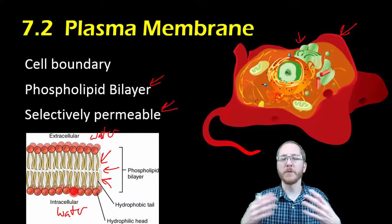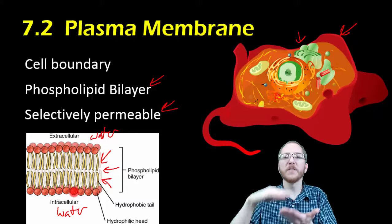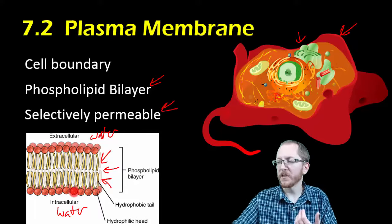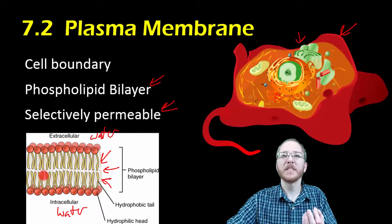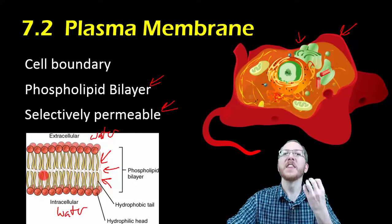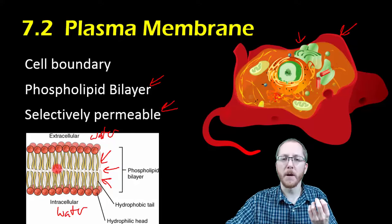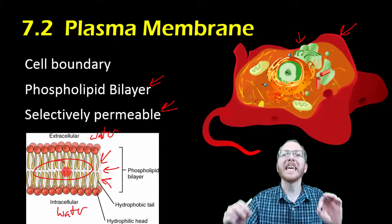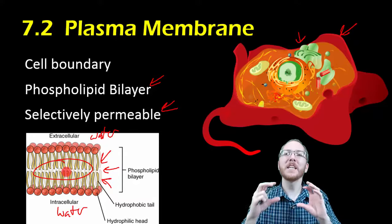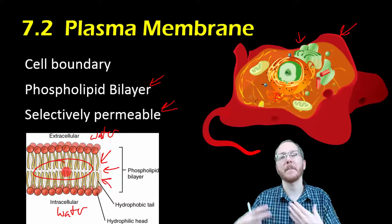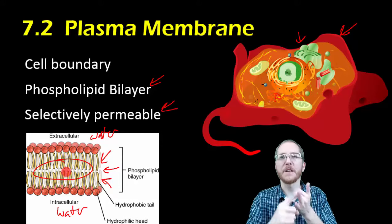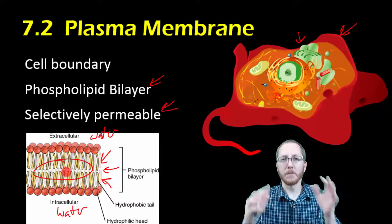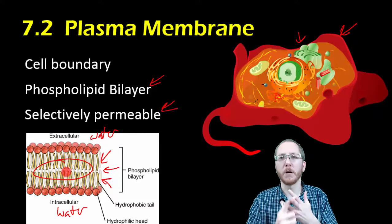Phospholipids arrange themselves in this bilayer, which is critical because substances that are too large can't get between the phospholipids to get inside. Substances that are very charged, like ions, can't get through because the hydrophobic middle part hates charge — if something charged tries to pass, it gets repelled. This is one way to control what gets into and out of the cell. Things that are small, or nonpolar, can typically get through without too much difficulty.